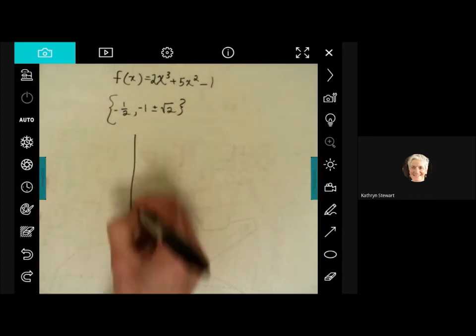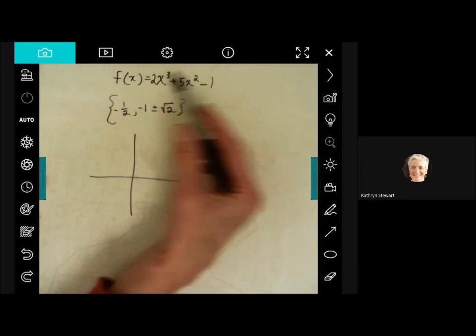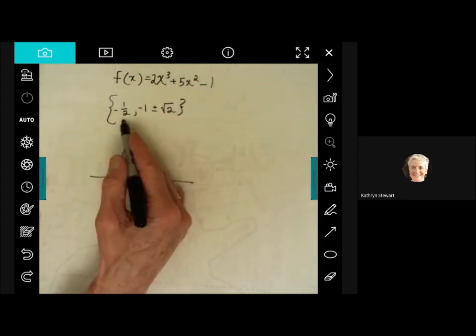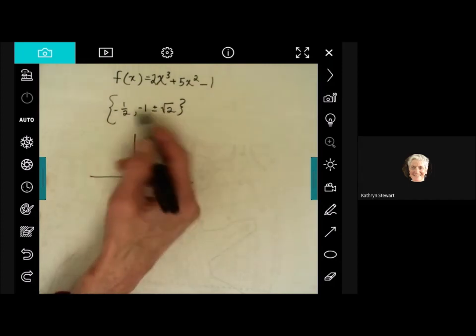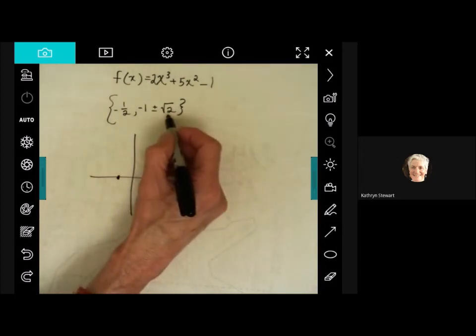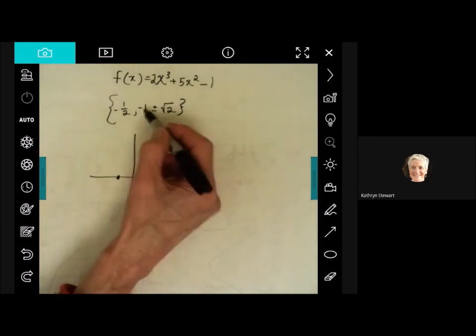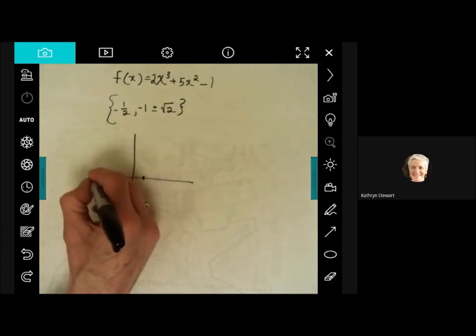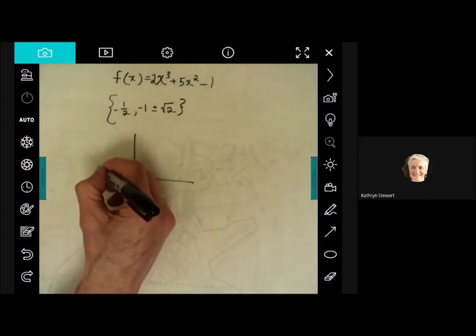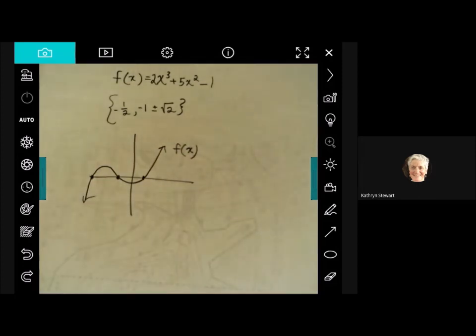So our last thing to do is just to make a very quick sketch of this cubic. So we know it's a degree 3 with a positive leading coefficient, so I know what my end behavior is going to look like. Let's just very quickly plunk down where these x-intercepts are going to happen. Of course, these are all real roots, so they're actually going to be x-intercepts. Negative 1 half, boom. Let's see, square root of 2 is around 1.4. So negative 1 plus 1.4-ish is going to be around 0.4. Negative 1 minus 1.4 would be like negative 2.4, something like that. So my cubic with my end behavior will look something like that. There's a reasonably good sketch of my cubic. I hope that was helpful. I think it was fun.